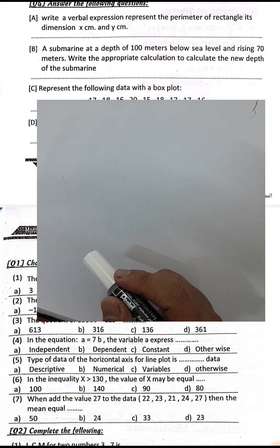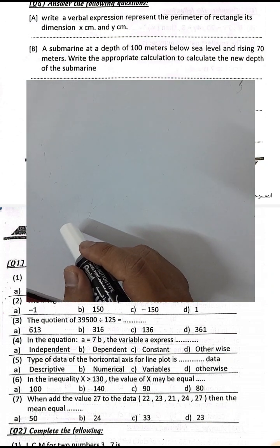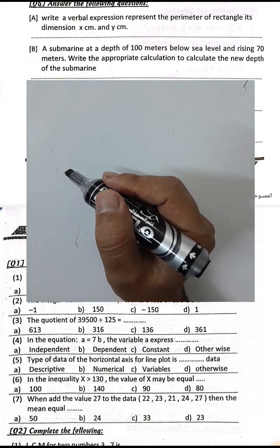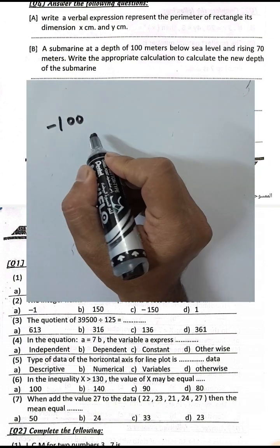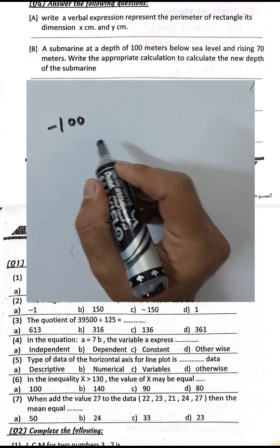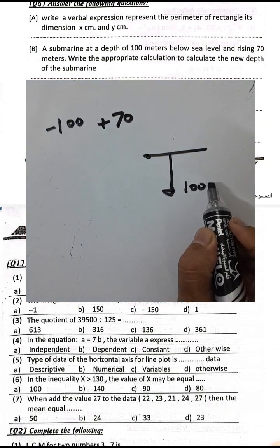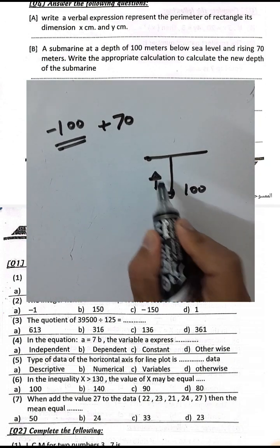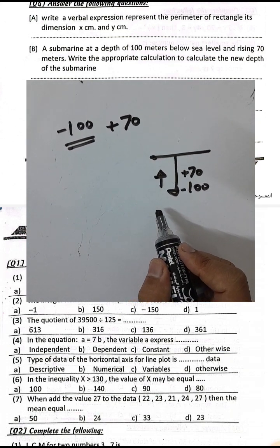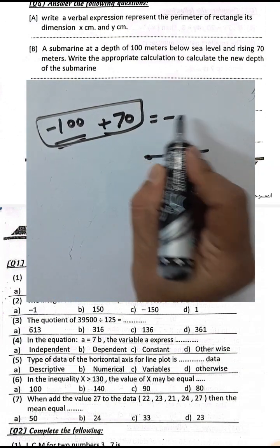Question 8: A submarine dips 100 meters below — that is negative 100. Then it rises 70 meters, which is positive 70. Calculate the new depth: negative 100 plus 70 equals negative 30.